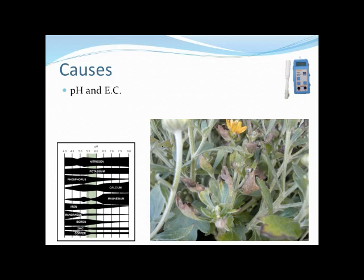Checking the pH and EC of our substrate is really key. The EC — electrical conductivity — is the amount of dissolved salts in our water or soil solution. If the EC gets too high, we might see what happened with these mums, which can be mistaken for a nutrient deficiency but is actually fertilizer burn — too much salt buildup in the substrate causes necrosis where those salts accumulate. We can use our pH and EC meter to calibrate our injector to make sure it's working right and delivering the expected fertilizer to the plants.